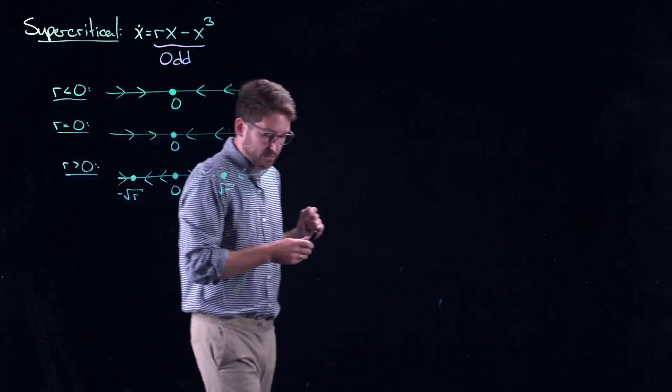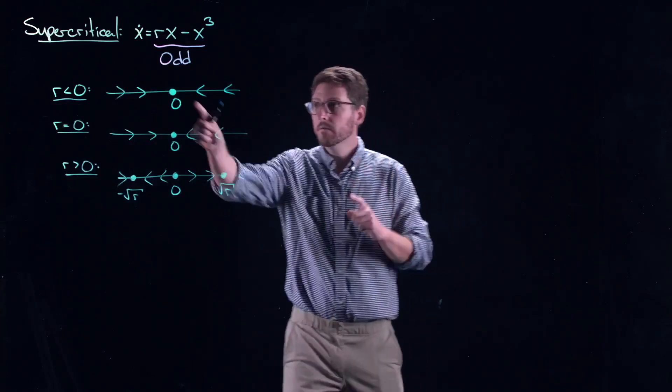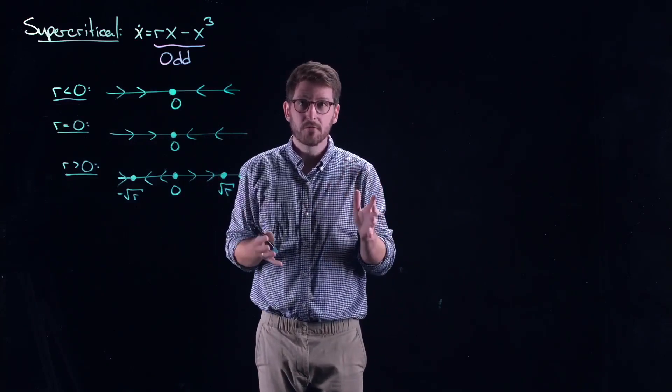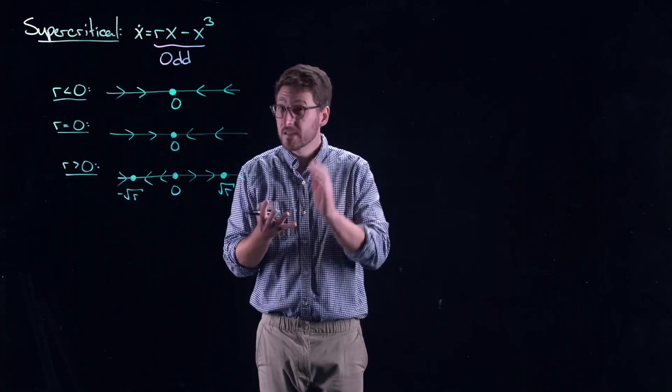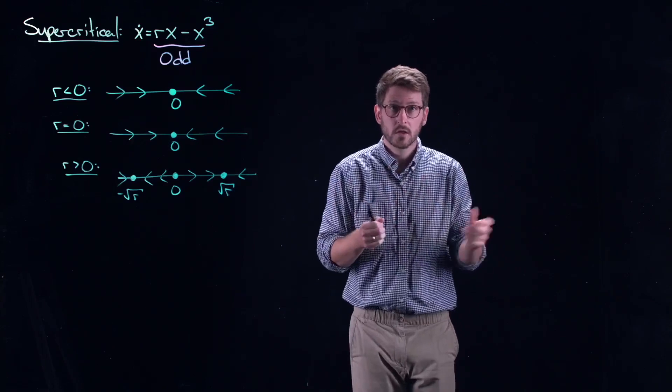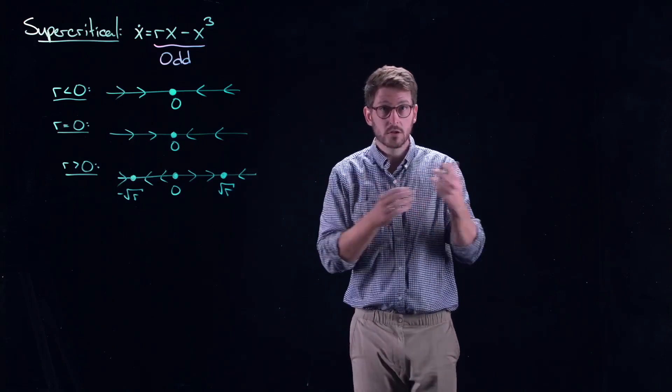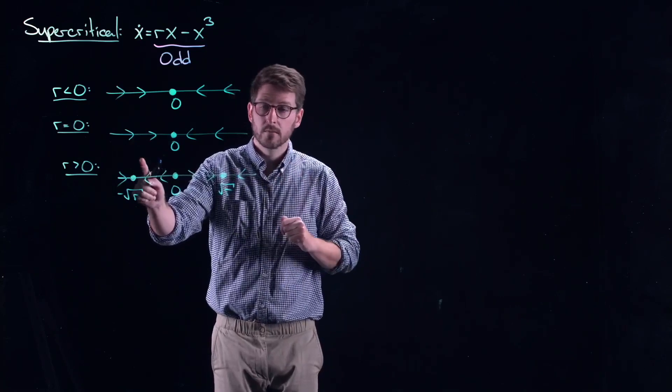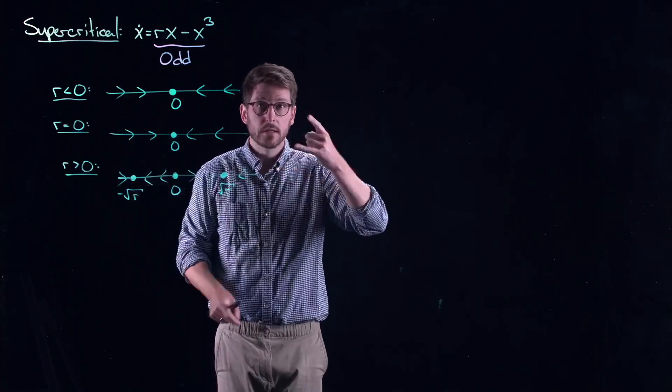Now, what else happens? You go from one fixed point to three. It's different than the saddle node. It's different than the transcritical. Transcritical is going from zero to two. Transcritical is two to two. Pitchfork is one to three. And these ones show up related by symmetry.